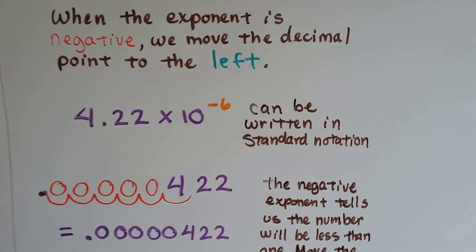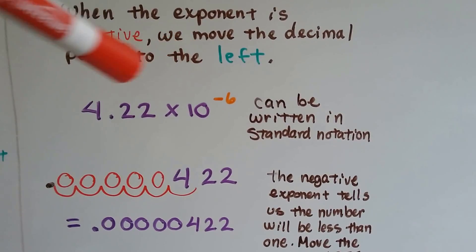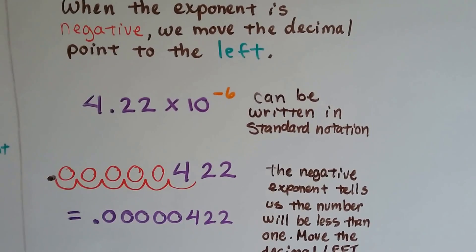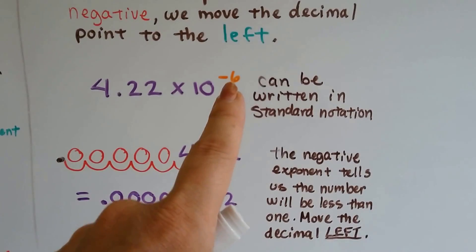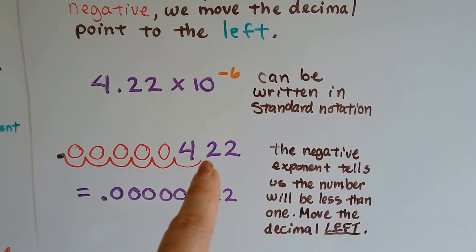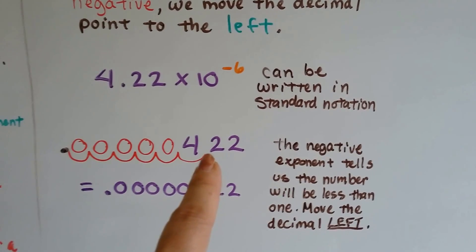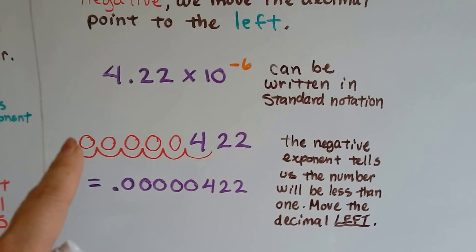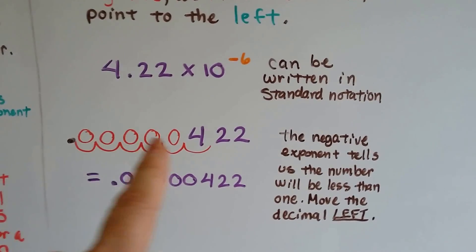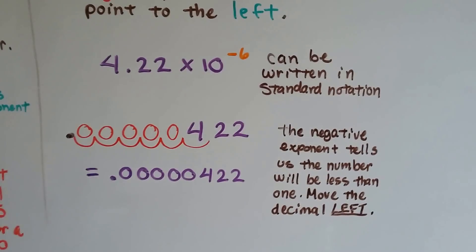4.22 times 10 to the negative 6 can be written in standard notation, regular numbers. All we have to do is look at this negative 6 and know how many times we need to hop over to the left: 1, 2, 3, 4, 5, 6. We put our decimal point, and in all the empty hop spaces we put a 0 as place value holders.